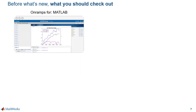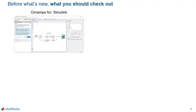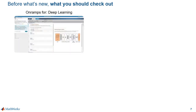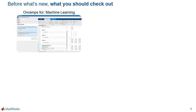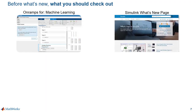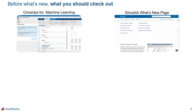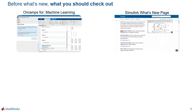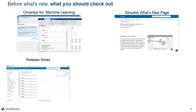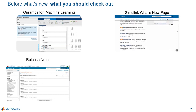Before we go into what's new, here's what you should check out when you want to learn more. Let's start with the on-ramps — these are free, interactive tutorials that help you learn and get started with the products in a matter of hours. There's one for MATLAB, one for Simulink, Stateflow, deep learning, and also one for machine learning. If you want a high-level curated list of the major highlights coming out in Simulink every release, check out our What's New page. And if you want all the details of what's new every release, then be sure to check out the release notes.